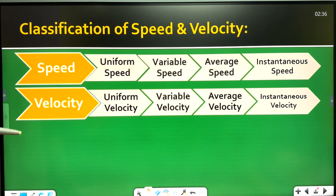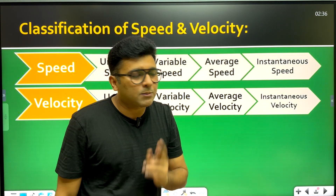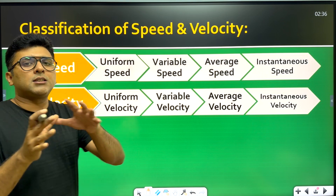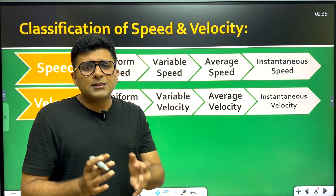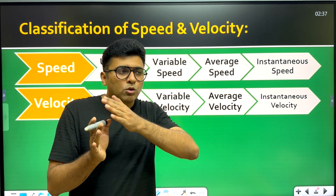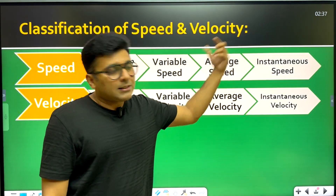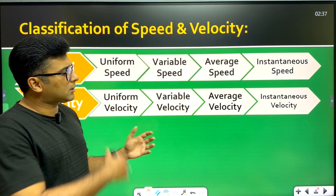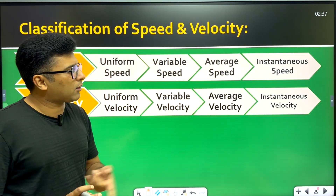From this classification, a likely one-mark or two-mark question would be about instantaneous speed or instantaneous velocity. Uniform speed means the speed remains constant over time. Variable speed means the speed changes with time. Average speed is the total distance divided by total time. Similarly, average velocity is the total displacement divided by total time.